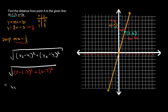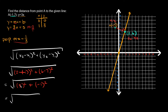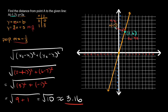Simplifying: 2 minus negative 1 equals 3, so we have 3 squared, which is 9. And 6 minus 7 equals negative 1, so negative 1 squared is 1. That gives us the square root of 9 plus 1, which is the square root of 10, approximately 3.16. So the distance from point A to the line is 3.16.